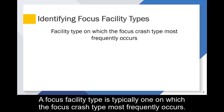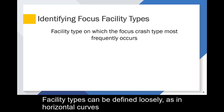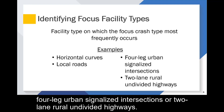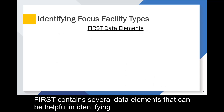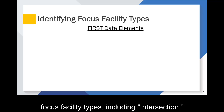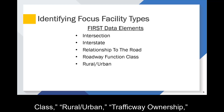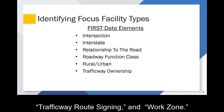A focus facility type is typically one on which the focus crash type most frequently occurs. Facility types can be defined loosely, as in horizontal curves or local roads, or precisely, as in four-leg urban signalized intersections or two-lane rural undivided highways. FIRST contains several data elements that can be helpful in identifying focus facility types, including intersection, interstate, relationship to the road, roadway function class, rural/urban, traffic way ownership, traffic way route signing, and work zone.